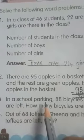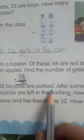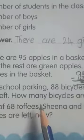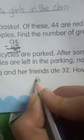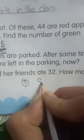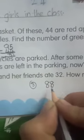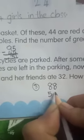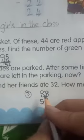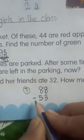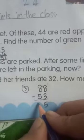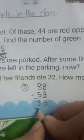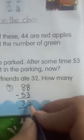Next, third question. In a school parking, 88 bicycles are parked. After some time, 53 are left. How many bicycles are left in the parking now? Children, in a school parking, 88 bicycles were parked. And after some time, 53 are left. So how many bicycles are left in the parking? 8 minus 3 is 5, and 8 minus 5 is 3. So there are 35 cycles in the parking now.